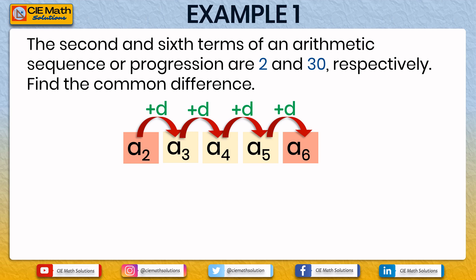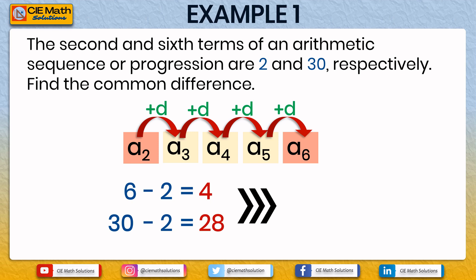We can check this by subtracting the orders of the given terms: 6 minus 2 equals 4, confirming there are 4 d's added. Now using the given values, subtracting A6 and A2 gives us 30 minus 2 equals 28. This means 28 is the total of all common differences added from A2 to A6, so 4d equals 28. Dividing both sides by 4, d equals 7. The common difference is 7.